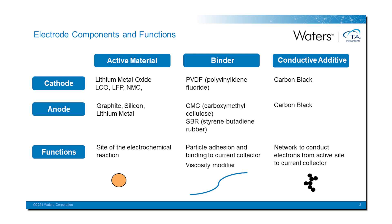The binder forms a physical network that adheres active materials and additive particles together and binds them to the current collector. It also serves as a viscosity modifier and ensures a stable network in the slurry state. The most commonly used binder for the cathode is PVDF, and for the anode it is usually a combination of carboxymethyl cellulose and styrene-butadiene rubber. Carbon black is generally used for both cathode and anode as the conductive additive.